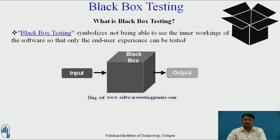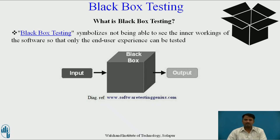Black box testing symbolizes not being able to see the inner working of the software, so that only the end user experience can be tested. In black box testing, we focus on inputs and outputs of the software system without bothering about internal knowledge. It is a software testing technique in which the functionality of the software under test (SUT) is tested without looking at internal core structure, implementation details, or knowledge of internal parts. This type of testing is based entirely on software requirements and specifications.